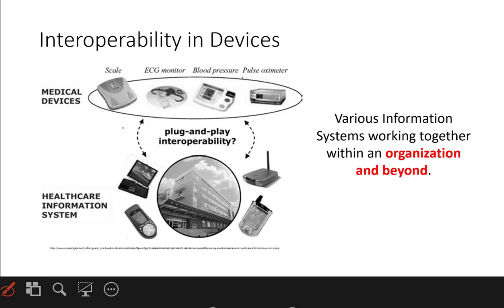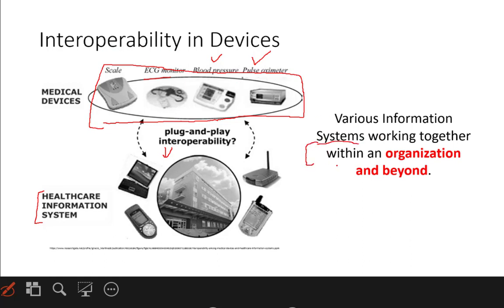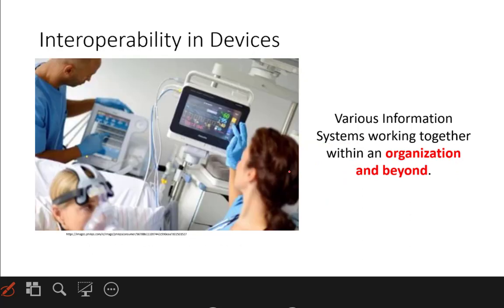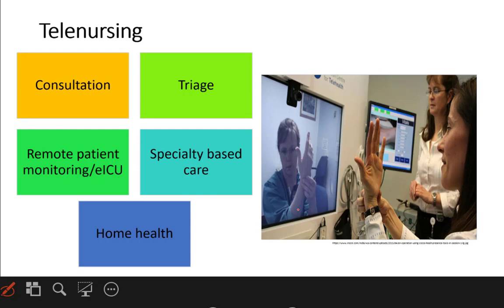When talking about interoperability in devices, what happens is you have ECG, BP, and oximeter monitored in the clinical setting and that data goes directly into the system — what we call the HIS or Healthcare Information System. The main idea behind interoperability is to understand how the system monitors. We can go back and check things at an organizational level, and even further, between organizations. Those systems are now in place and being implemented so that information flows into the system and you can observe it later.